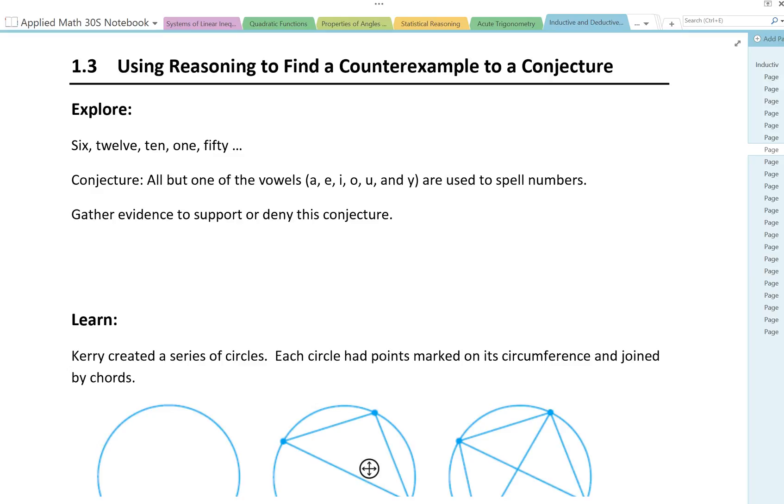At this point we start to test that conjecture. So thinking about all the different numbers, are all of our vowels always used? Well we could see here in the ones that they show us: 6, 12, 10, 1, 50.